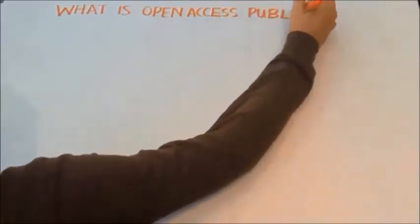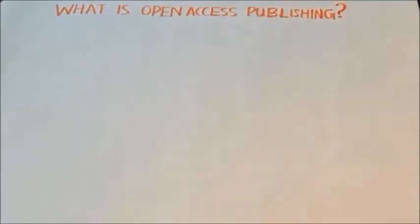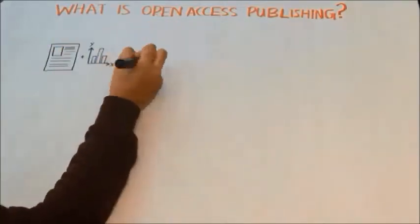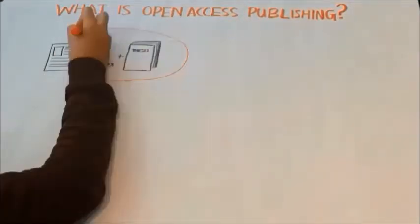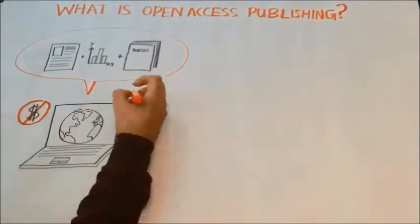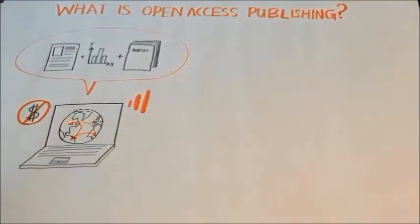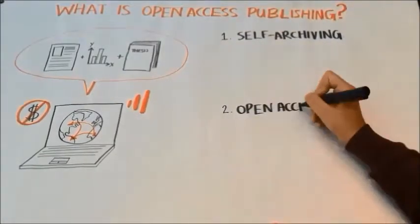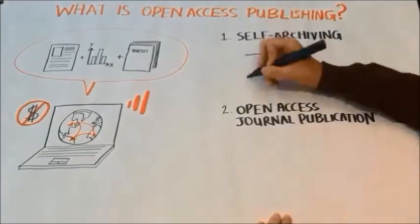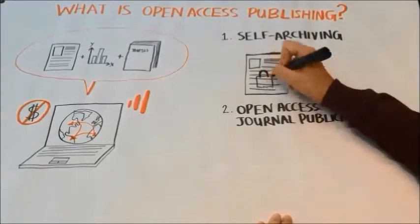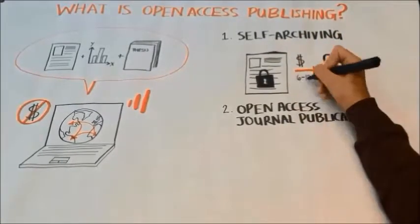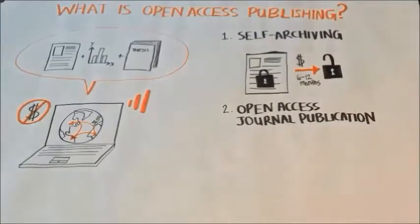Grand Challenges Canada requires innovators who publish their findings to do so on an open access basis. Open access publishing means making published scientific information such as peer-reviewed articles, conference proceedings, theses, and working papers available online and free of charge in a manner that enables open use and exploitation by researchers and society at large. There are generally two ways to make published scientific information available on an open access basis: self-archiving and open access journal publication. Self-archiving is when an author publishes research findings in a paid access peer-reviewed journal that permits the manuscript or published article to be deposited or archived in an openly accessible repository, typically after a six to twelve month embargo period.